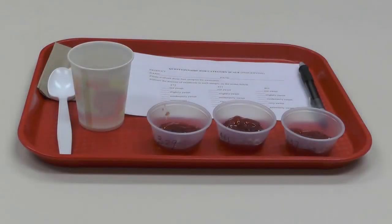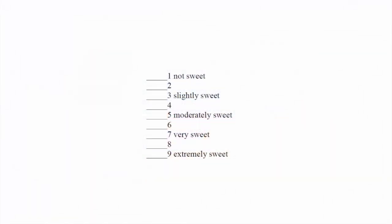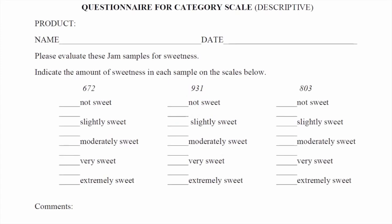Category scales are also known as structured scales. They range from 6 to 10 points, with 7-point and 9-point category scales being the most commonly used. This type of descriptive analysis allows one or more samples to be evaluated for single or multiple attributes. Here is an example of a category scale questionnaire asking the panelists to evaluate three different jam samples for sweetness and to indicate the level of sweetness that best suits the sample.